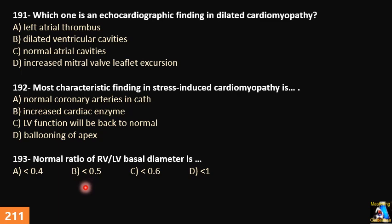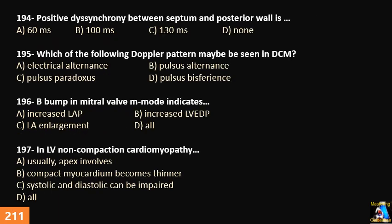Question 193: Normal ratio of RV to LV basal diameter is: A) less than 0.4, B) less than 0.5, C) less than 0.6, or D) less than 1. Question 194: Positive dyssynchrony between septum and posterior wall is: A) 60 ms, B) 100 ms, C) 130 ms, or D) none of them.